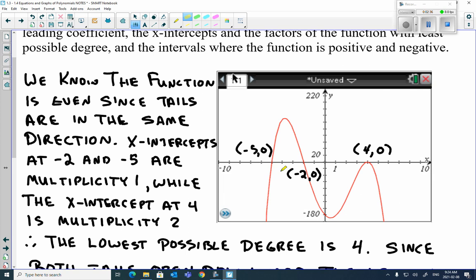We can see that the x-intercepts are negative 5, negative 2, and 4. But that's only 3 x-intercepts. But there's a bounce in here.